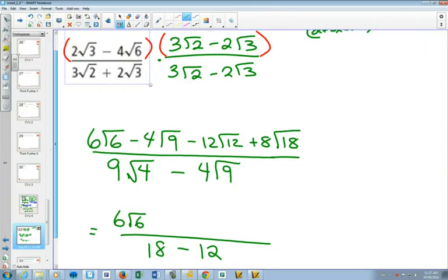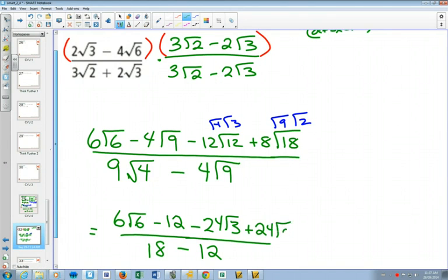Yeah, the root 9 will just become a 3. And so 4 times 3, this will be minus 12. Root 12 is root 4 times root 3. And root 18 will be root 9 times root 2. So that square root of 4 will mean a 2 will come out in front. And that will mean I'll have minus 24 root 3. And that root 9 will mean a 3 will come out in front. So I'll have plus 24 root 2.